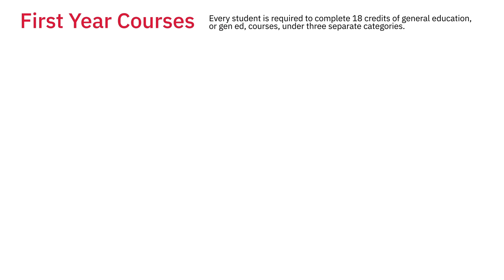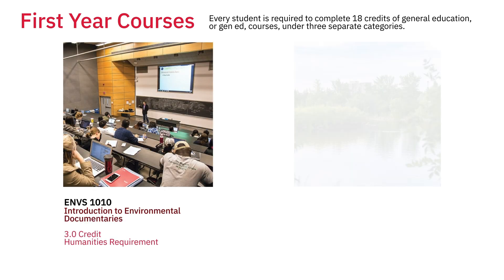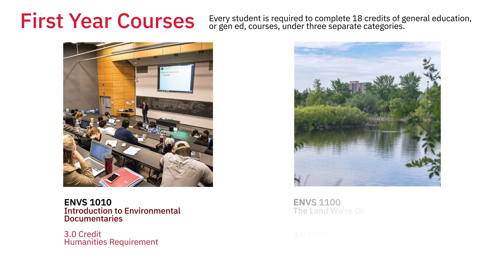For your six-credit Humanities Gen Ed requirement, you will be enrolling in MBS 1010, Introduction to Environmental Documentaries, and MBS 1100, The Land We're On.